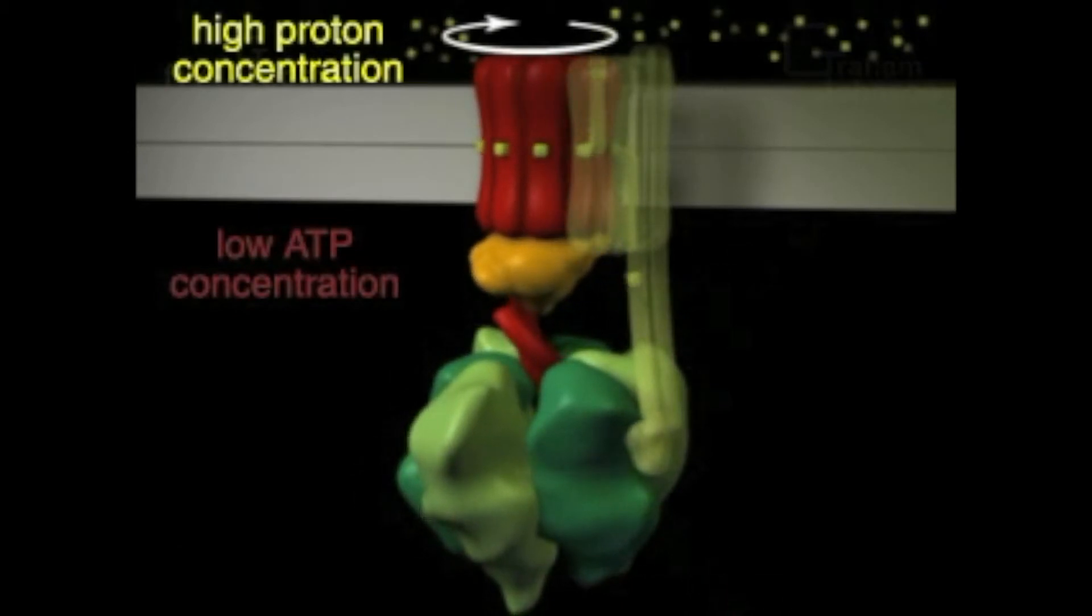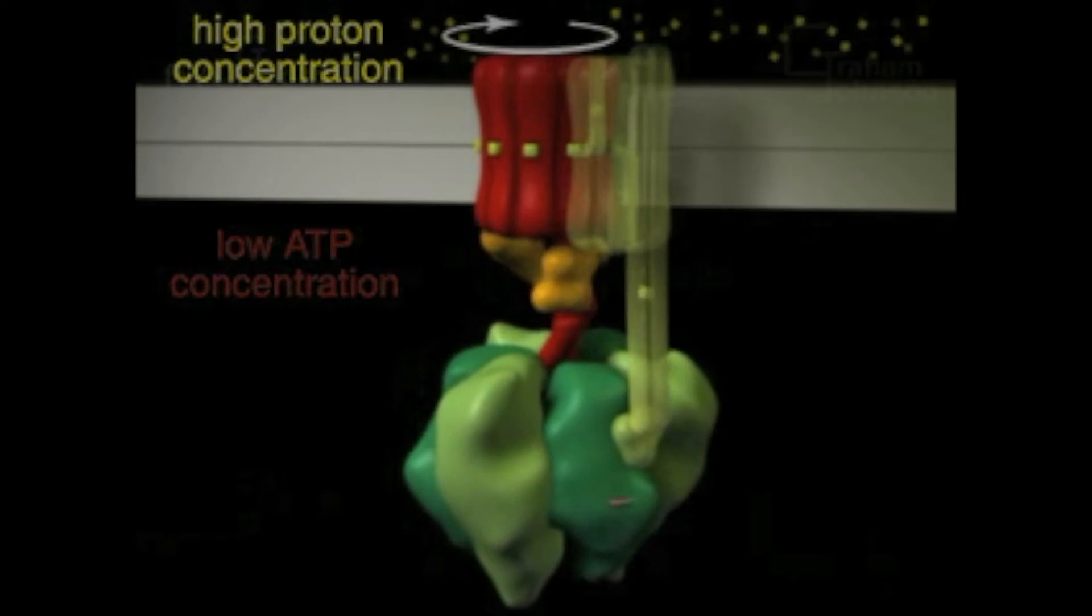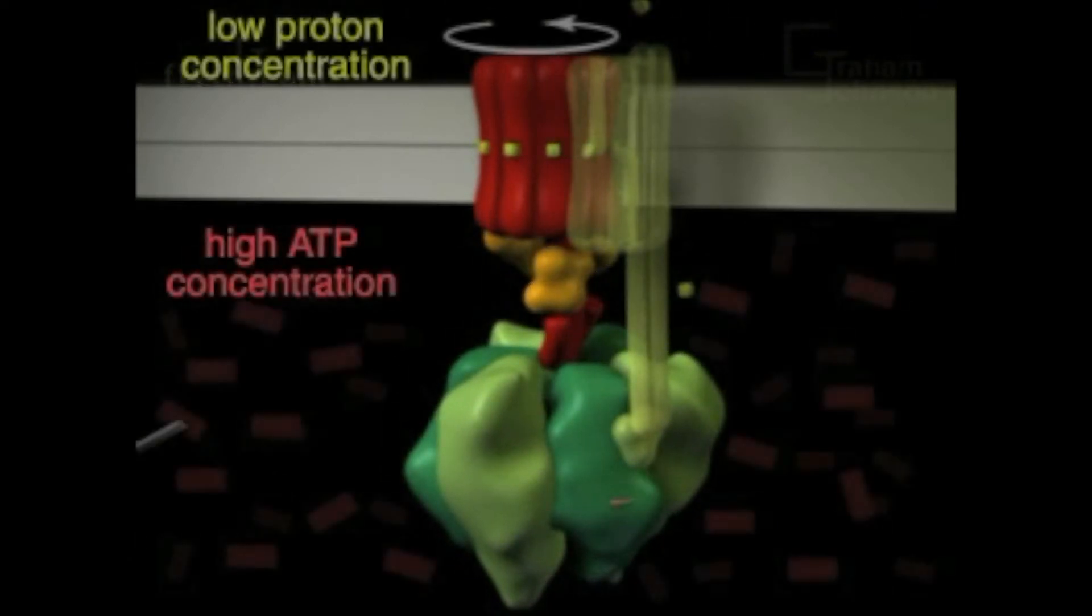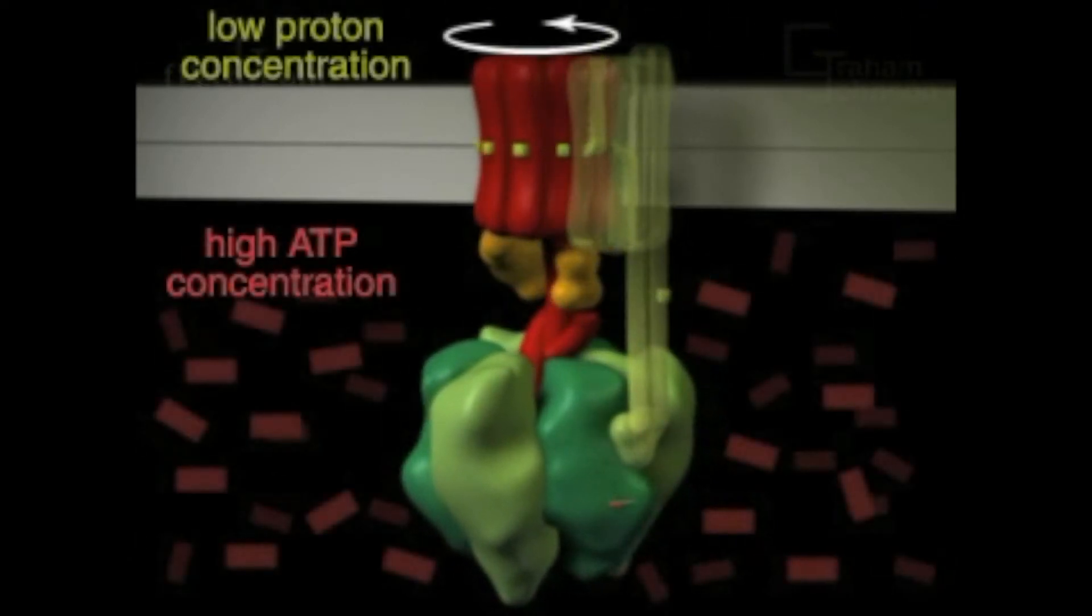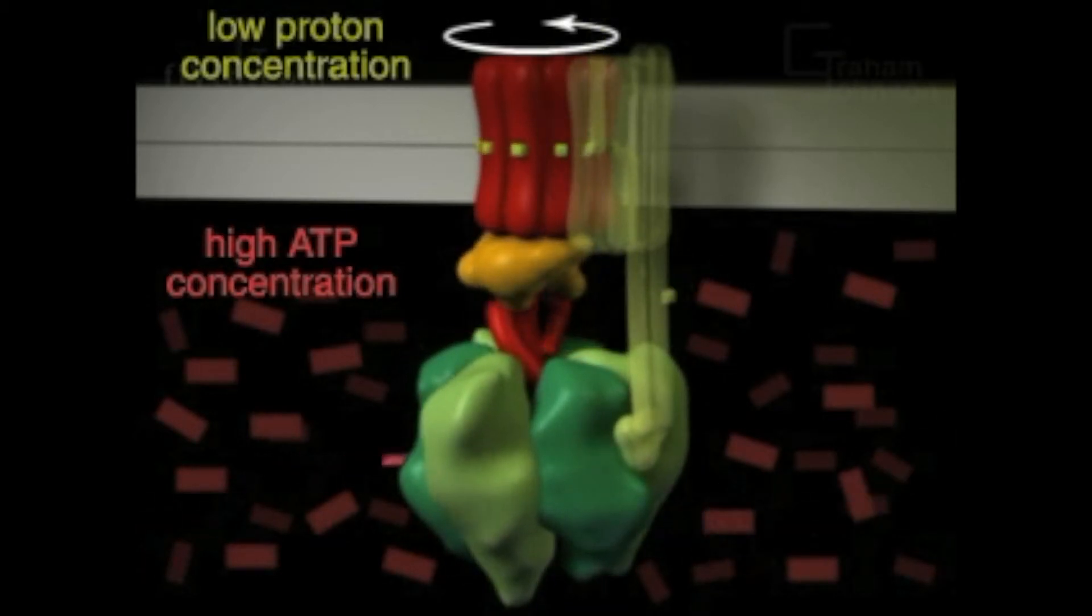Like any enzyme, ATP synthase can work in either direction. If the concentration of ATP is high and the proton gradient low, ATP synthase will run in reverse, hydrolyzing ATP as it pumps protons across the membrane.